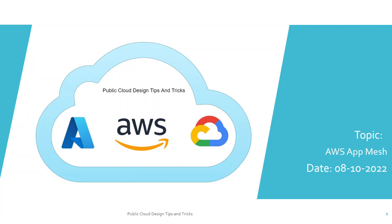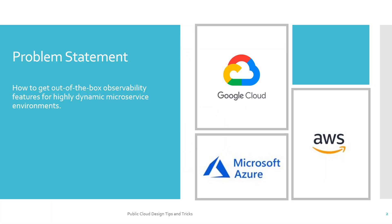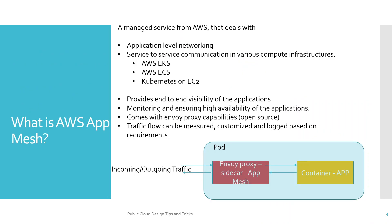Hello all, welcome to Public Cloud Design Tips and Tricks again. As a part of Service Mesh, today's topic is AWS App Mesh. The problem statement is the same: how to get out-of-the-box observability features for highly dynamic microservice environments. AWS App Mesh is a managed service from AWS which deals with application-level networking and service-to-service communication in various compute infrastructures within AWS.